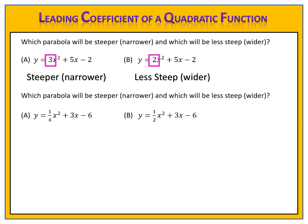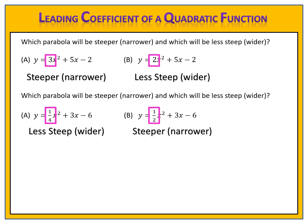Let's try another example. Here are two functions. Which will have the steeper or narrower graph, and which will have the wider and less steep graph? y equals one-fourth x squared plus 3x minus 6, versus y equals one-half x squared plus 3x minus 6. We compare by looking at the leading coefficients: one-fourth and one-half. One-fourth is smaller than one-half. The function with the smaller leading coefficient will have the wider or less steep graph, and the function with the larger leading coefficient will have the steeper or narrower graph. So one-fourth gives the wider graph, and function B with one-half gives the steeper or narrower graph.